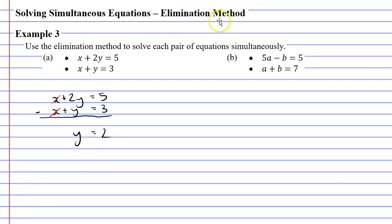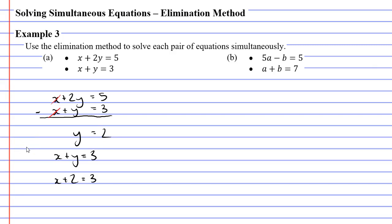The reason we call this the elimination method is because it eliminates one of the pronumerals — in this case it eliminated the x's. Now that we know y equals 2, we can find x by picking either equation. The second equation looks simplest, so I'll use x plus y equals 3. Since y equals 2, that becomes x plus 2 equals 3, so x must equal 1. I'll highlight that y equals 2 and x equals 1.